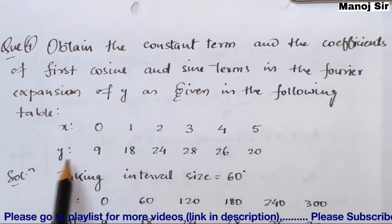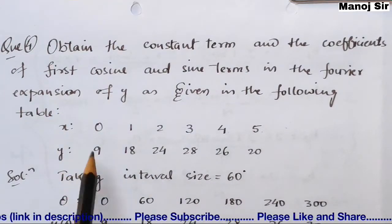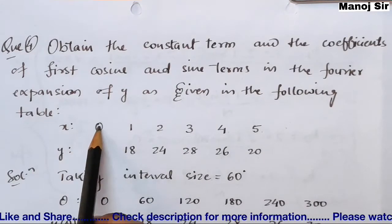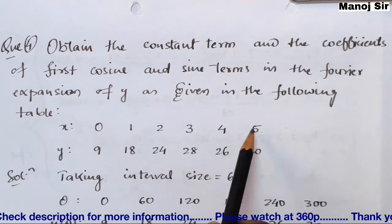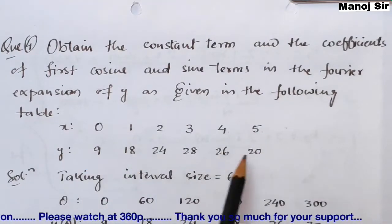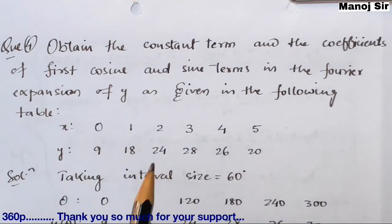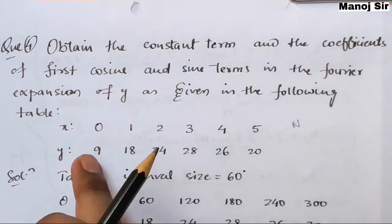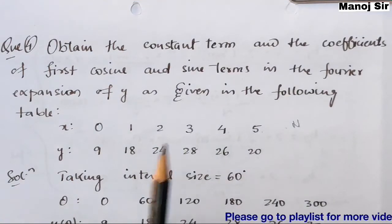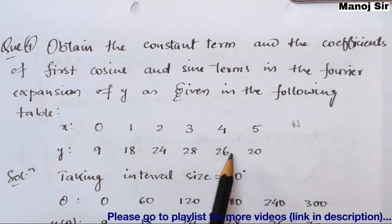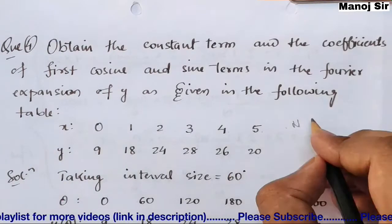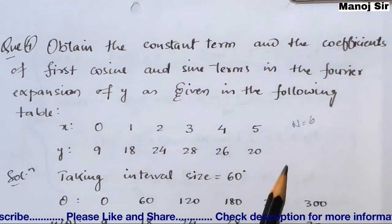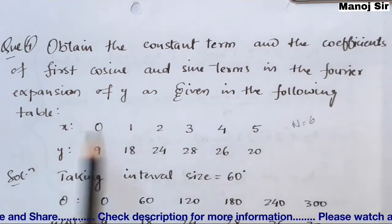We have values of x and corresponding values of y. At x=0, y=9; at x=1, y=18; and so on. At x=5, y=20. Since both endpoint values are not the same, we take n by counting all values: 1, 2, 3, 4, 5, 6. We have 6 values of y, so we take capital N equals 6.